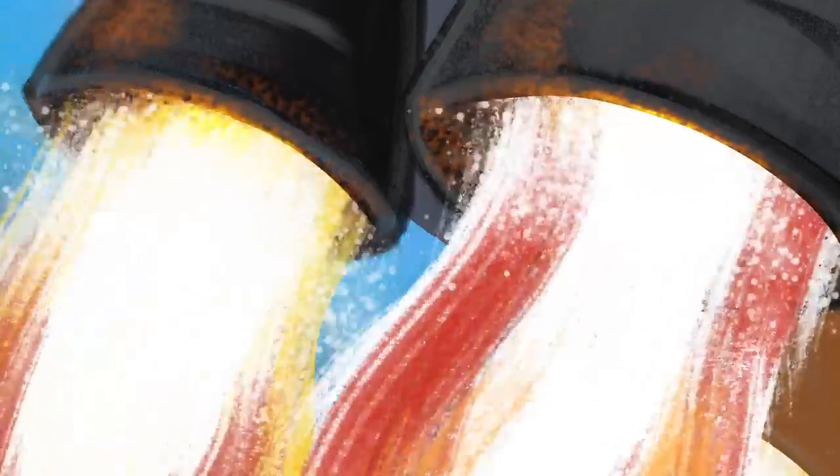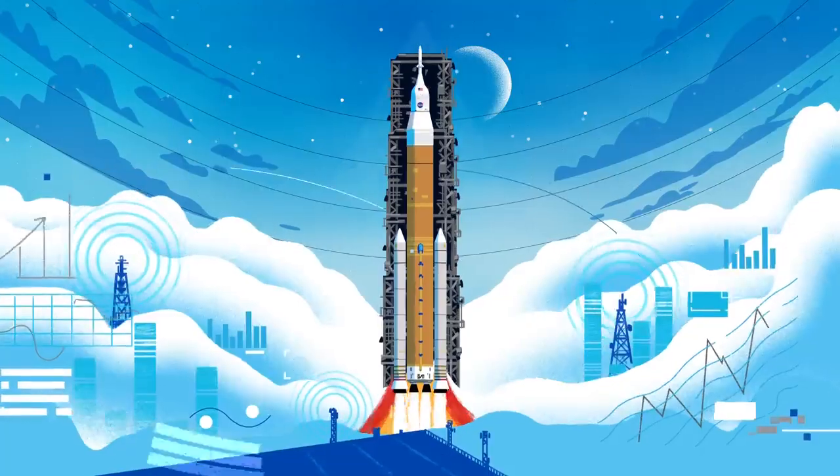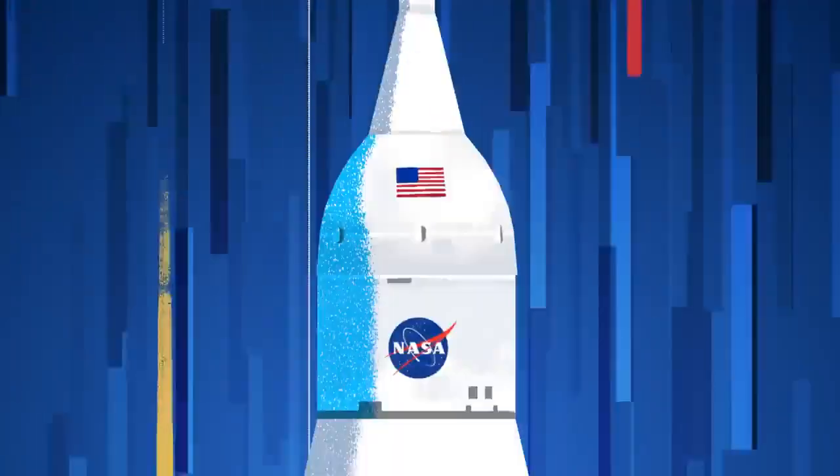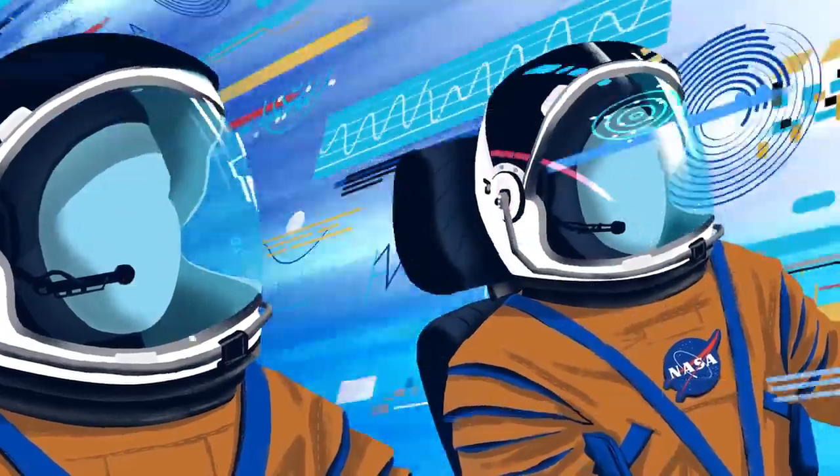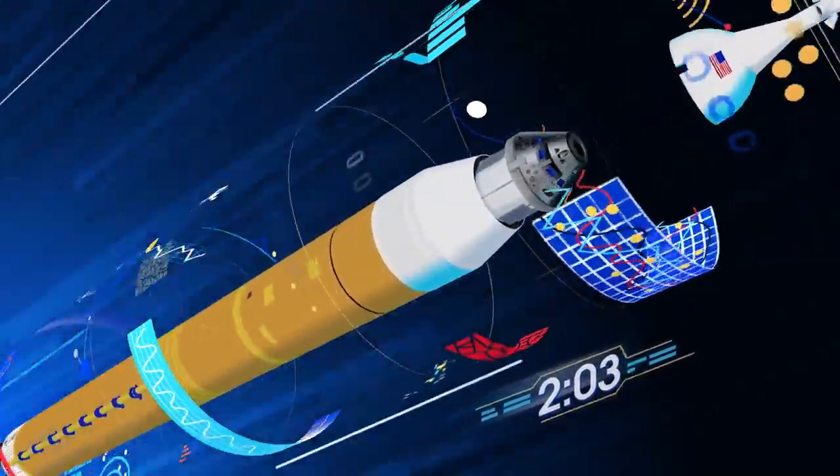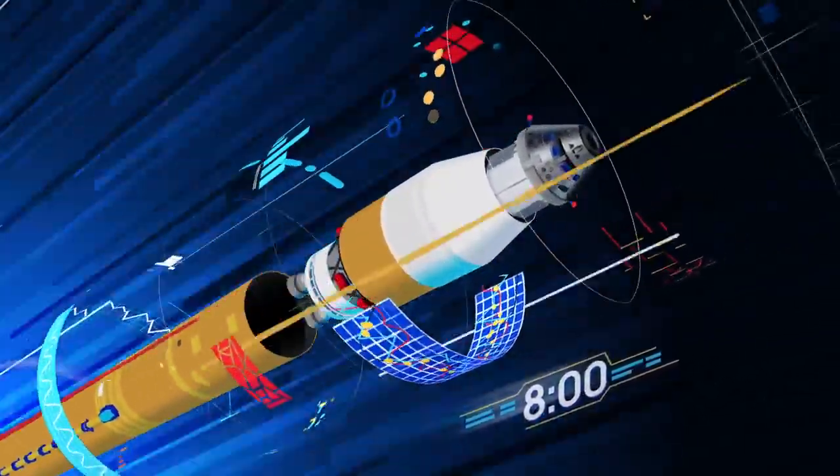Once ignited, there is no stopping what comes next. All four RS-25 engines and the two solid rocket boosters come to life, thundering our crew upwards. Two minutes after ignition, the solid rocket boosters are spent and released. Eight minutes after launch, the core stage is depleted and separated.